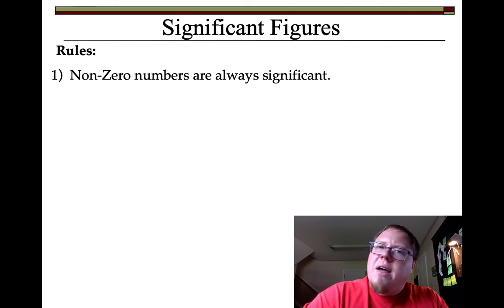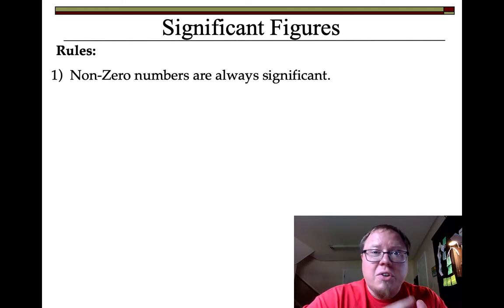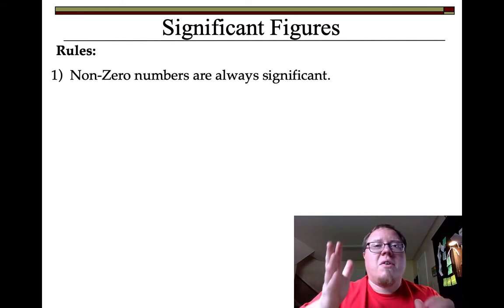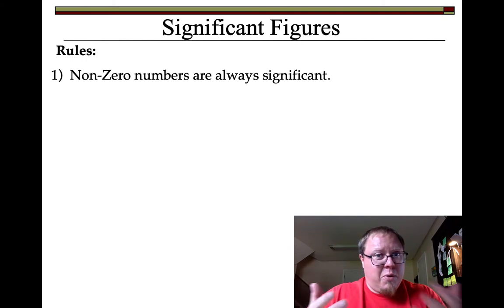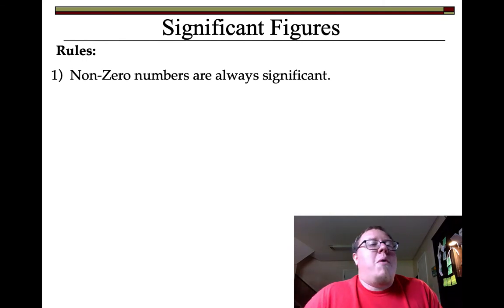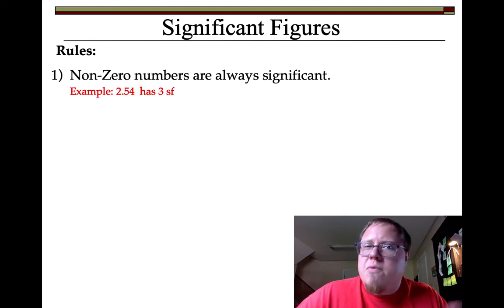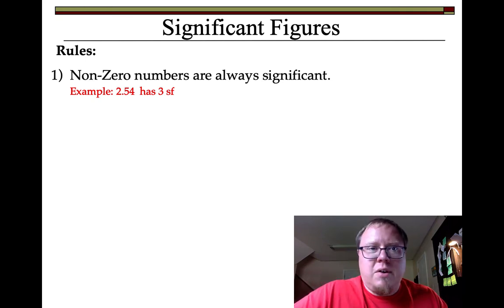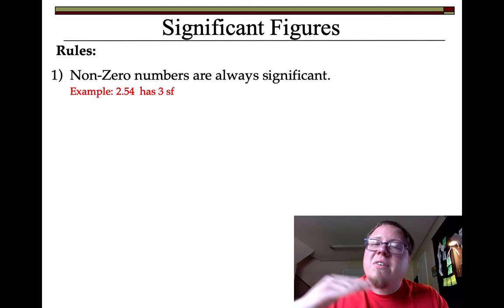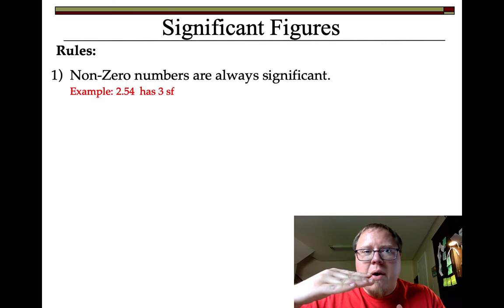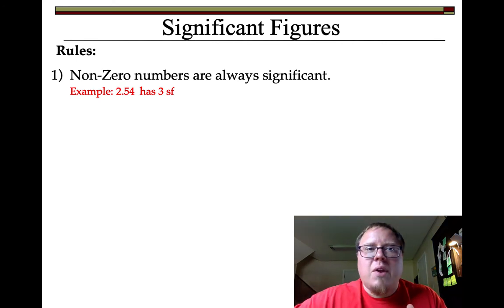So if you write down the number 23, the 2 and the 3 are both significant — they both count because you were able to read them. Another example: 2.54 has three significant figures — the 2, the 5, and the 4. You had a ones place, a tenths place, and a hundredths place. They're estimating on that 4 — they had a 2.5 and a 2.6 line and are estimating it's about 4 tenths of the way between them.